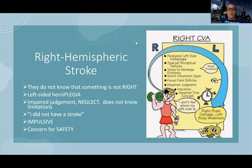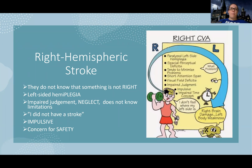Then there's a right hemispheric or right brain stroke. The way I remember this is that they do not know that something is not right. These patients are the complete opposite — they are completely, blissfully unaware that they've had a stroke. Most of these patients will completely deny it. I've literally had a patient that was trying to get up out of bed and I said, 'You can't get up.'